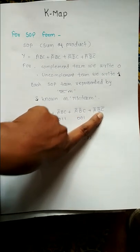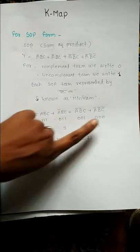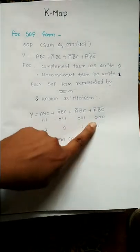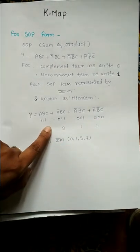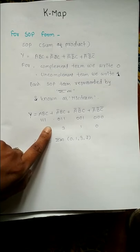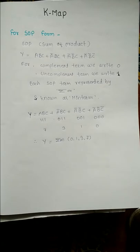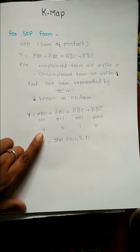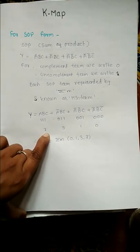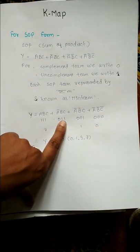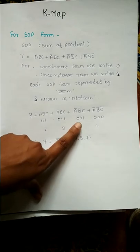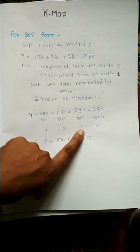Then we go for our chart. Watch my earlier video link in description. From that, for 111 I have written here 7, for 011 I have written here 3, for 001 I have written here 1, for 000 I have written here 0.